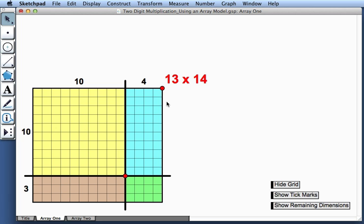So if we want to figure out the product of 13 and 14, we simply add those together: 100, 40, 30, and 12 to get 182.